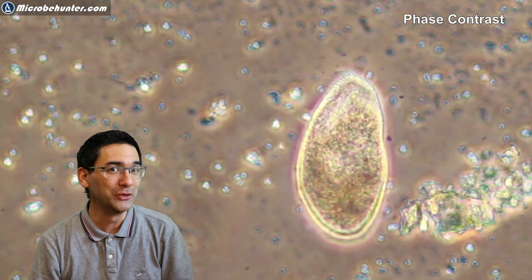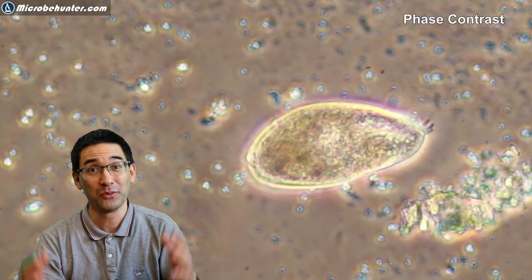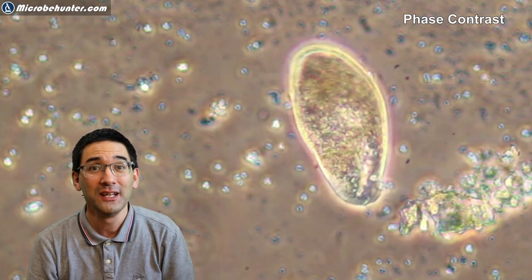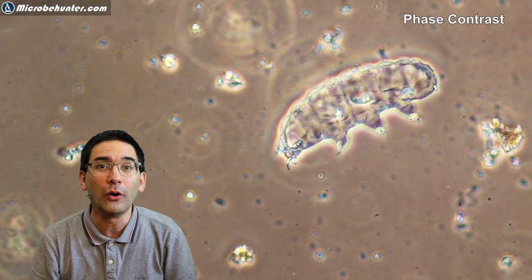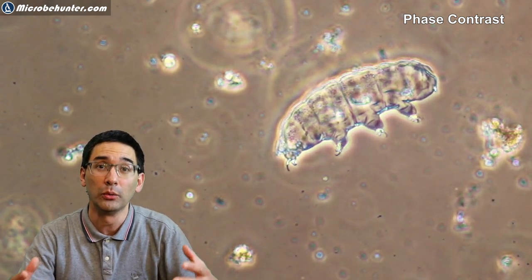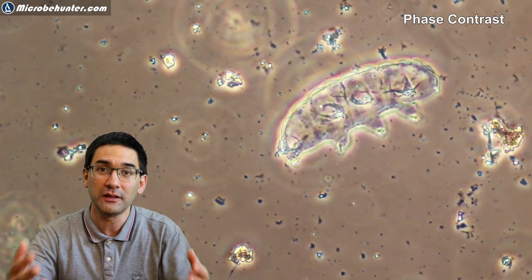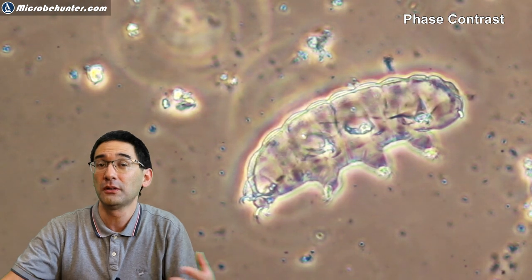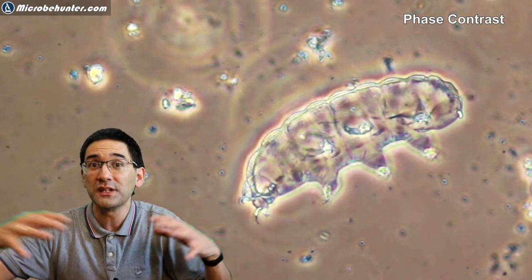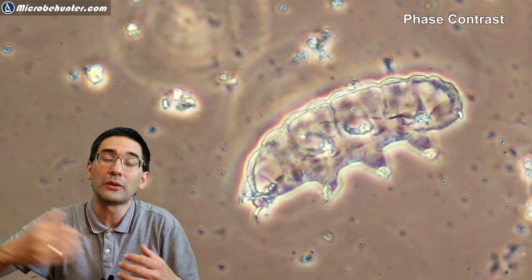One of the things I really liked finding and was a little bit surprised to find is this skin of a tardigrade. What tardigrades do is when they grow, they molt—they shed off their skin. This seems to be one of those empty skins. Then out comes the tardigrade, slightly larger. Every time the skin becomes too tight, they cast it off.